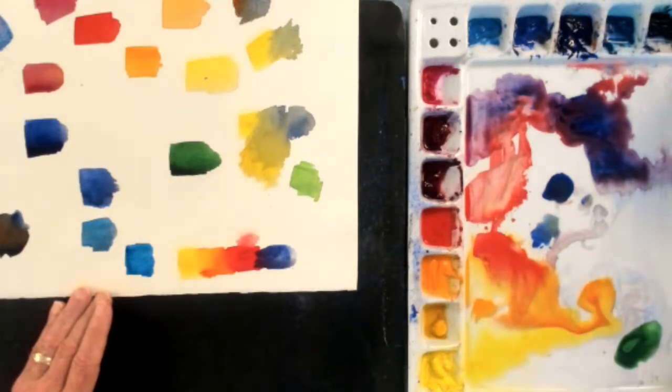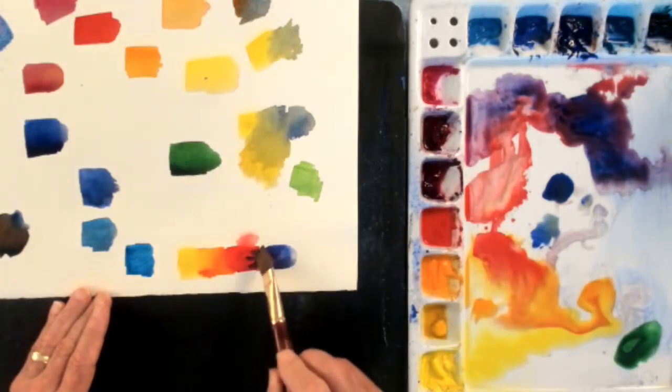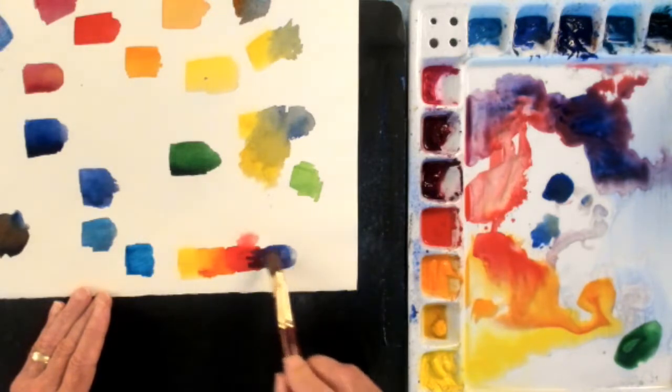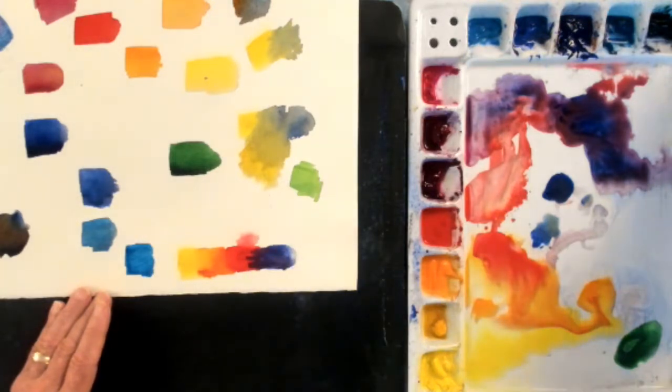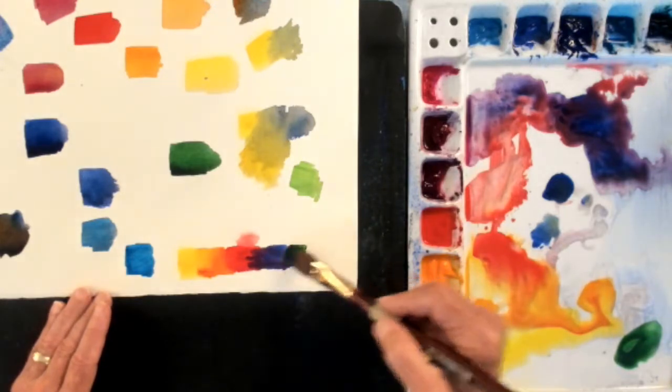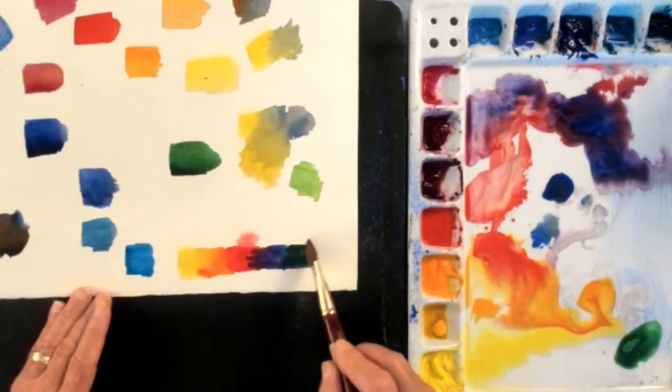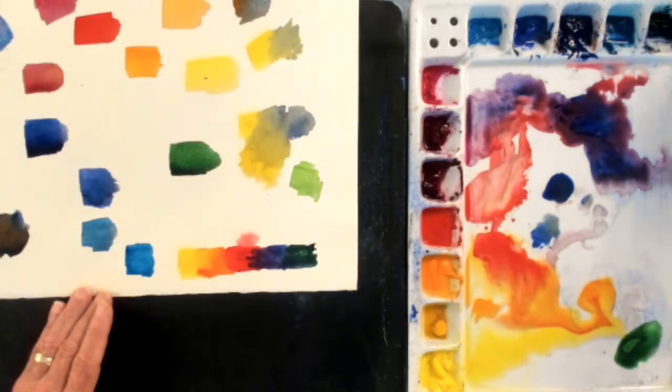Here I mixed a little bit of blue, cobalt blue in with that red. Now it gives me a purple. Then I can pick up the green.